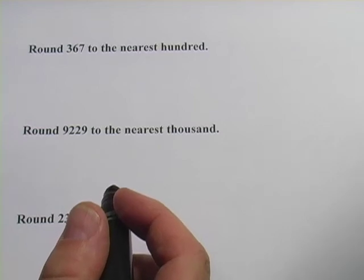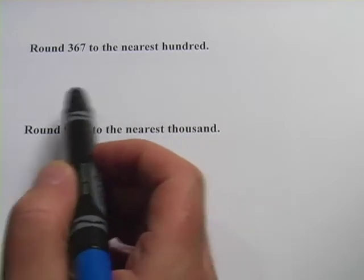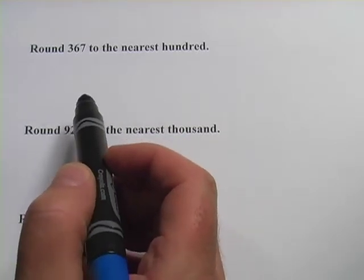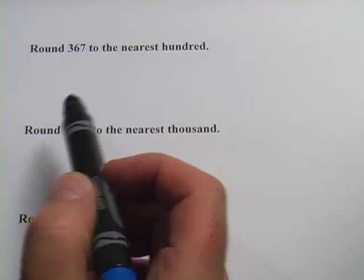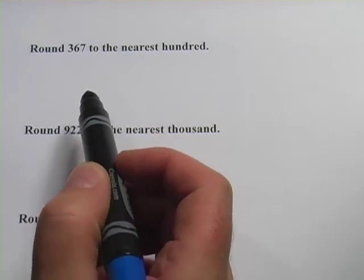These problems are about rounding, and rounding is a very useful thing to know how to do. You can round in a lot of different ways. You can round to the nearest one, to the nearest ten, to the nearest hundred. You can round to the nearest thousandth. So lots of different ways to round.